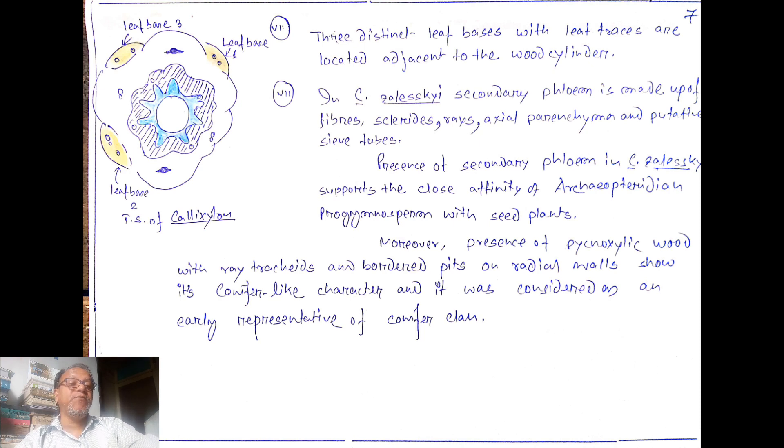In Callixylon zalesskyi, secondary phloem is made up of fibers, sclereids, rays, axial parenchyma, and putative sieve tubes. The presence of secondary phloem in this particular species supports the close affinity of Archaeopteridian Progymnospermopsida with seed plants. This Moroccan species proves that Progymnospermopsida has affinity to the seed plants.